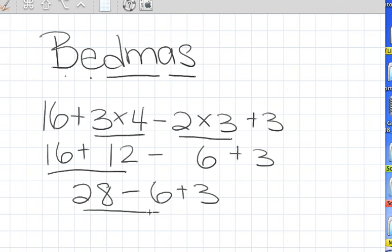So now I've got 28 minus 6, which gives me 22 plus 3. And 22 plus 3 gives me a final answer of 25. So remember to keep your questions in order. And you should get the correct answer.